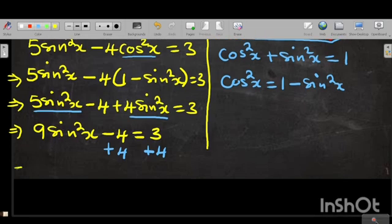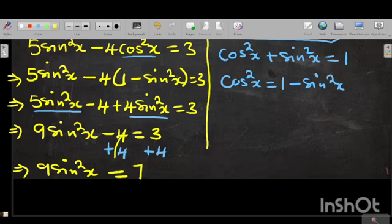So that here becomes a 0. What will remain is just this term. So we are going to have 9 sin squared x. This becomes a 0 is equal to 3 plus 4 is 7 as required.